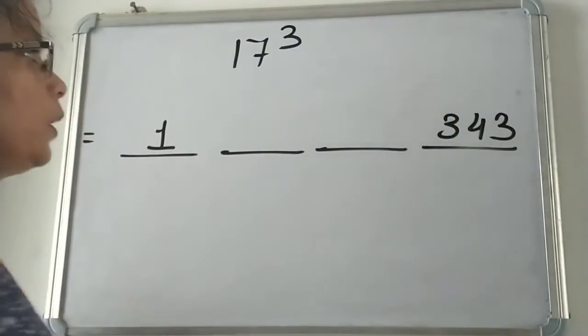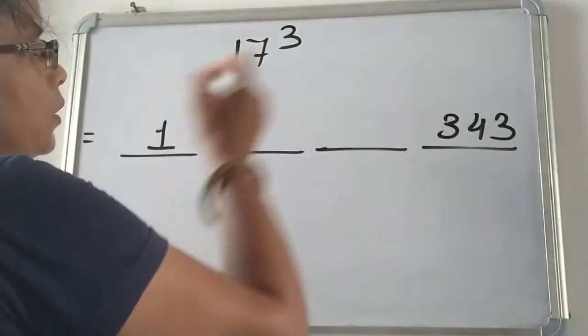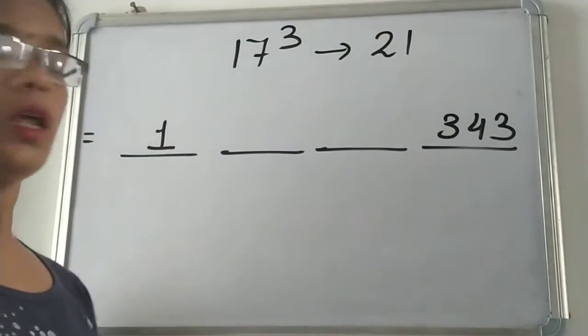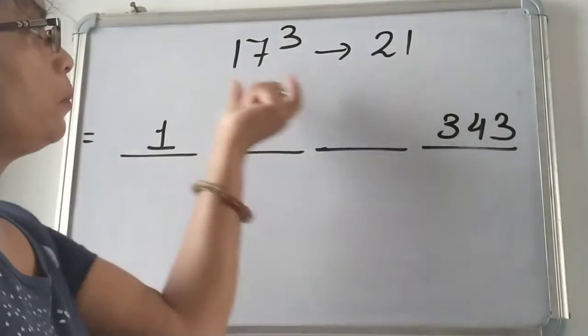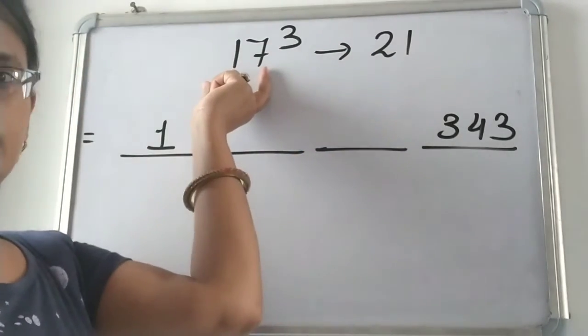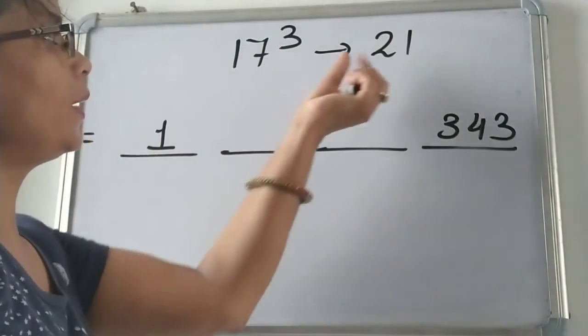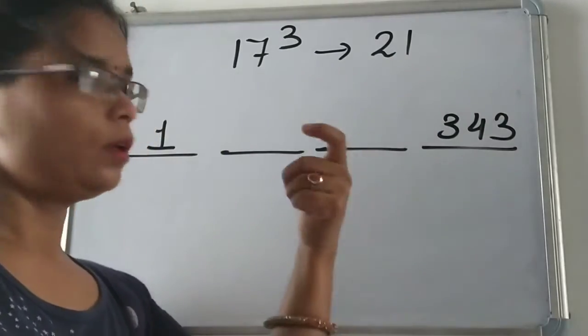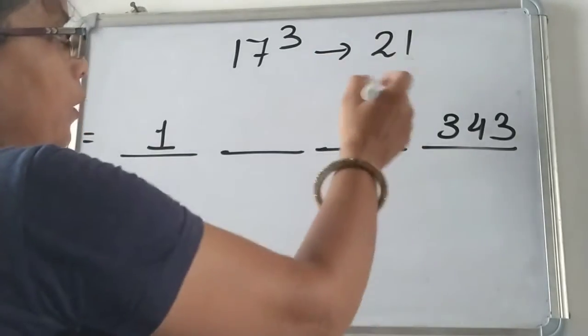Now we will multiply these digits and the multiplication is 21 here. This 21 is the multiple of 1 and 7. Now we will multiply this 21 to 1 and 7 to get the second and third number.